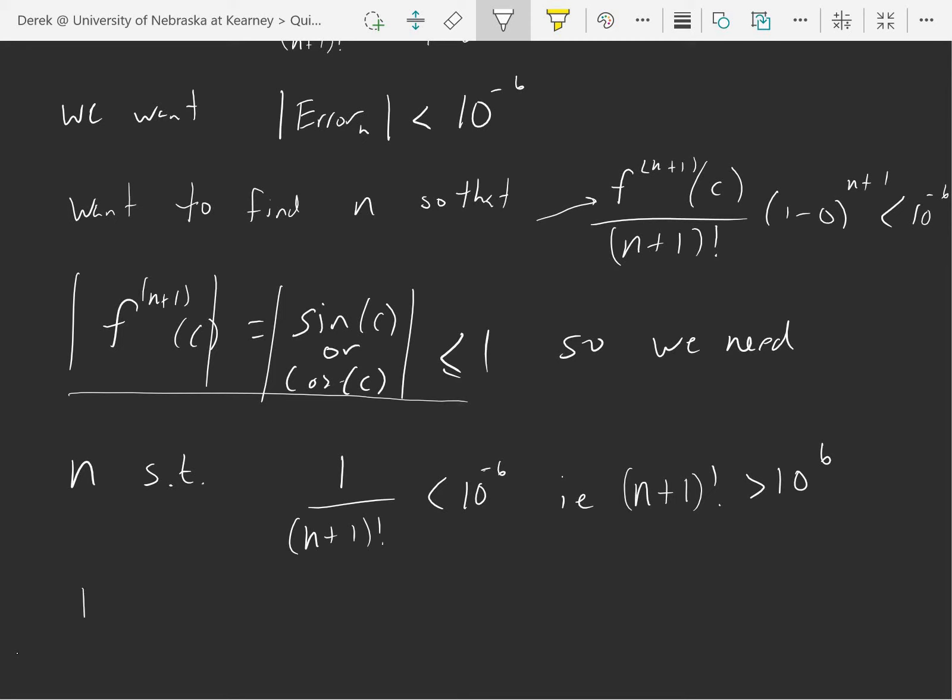So I need 1, 2, 2, 6, 24, 120, 720, 5040, times 8 would be 40,320, and then times 9 I get 362,880. That's not quite 10 to the 6th, so I better go out to 10.